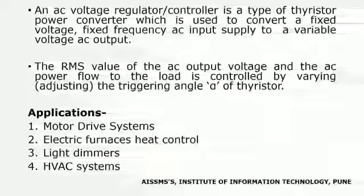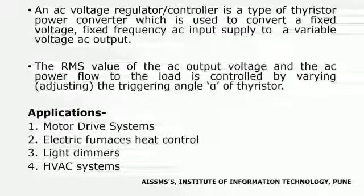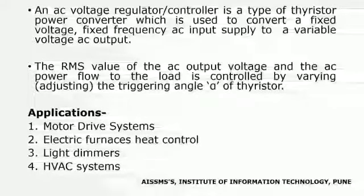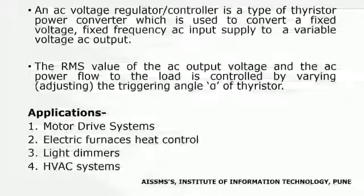What is an AC voltage regulator? An AC voltage regulator is a power converter which is used to convert a fixed voltage, fixed frequency AC input supply to a variable voltage AC output. It consists of power electronic devices such as a thyristor or triac. The RMS value of the AC output voltage and the AC power flow to the load is controlled by varying the firing angle or triggering angle alpha of a thyristor.